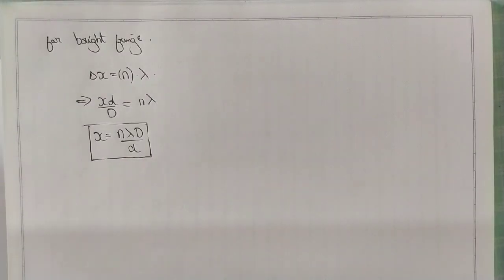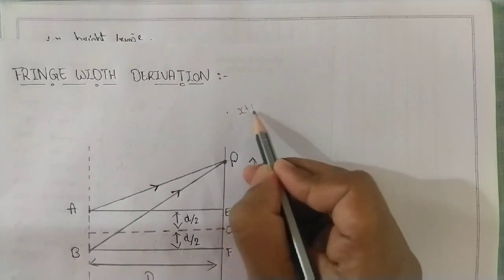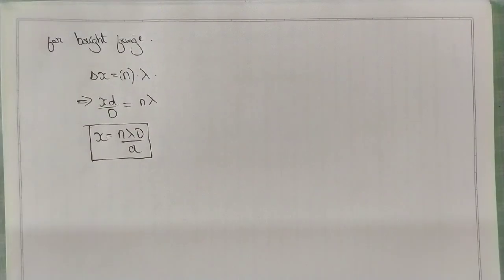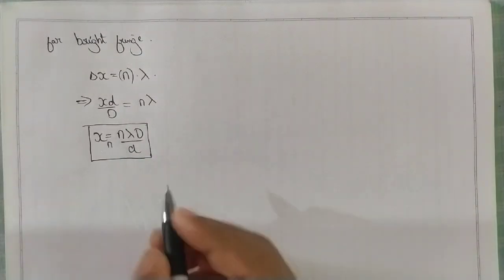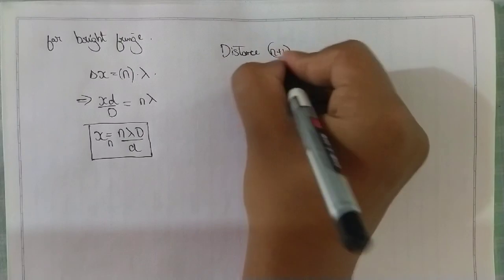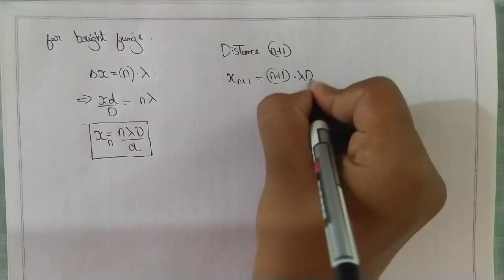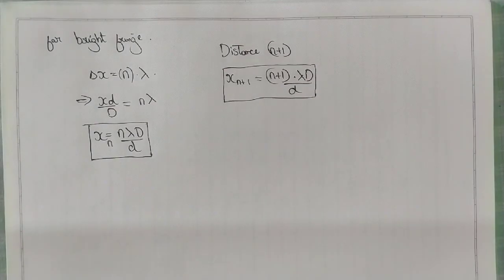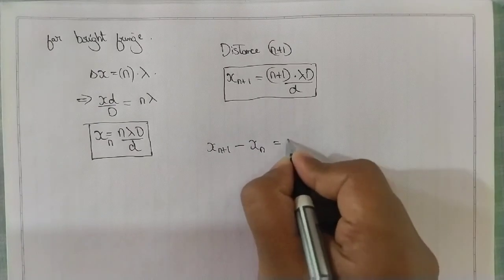Now to find the fringe width, we are supposed to take the next point, that is X_{n+1}. We substitute n+1 in this equation: X_{n+1} = (n+1)·λD/d. The fringe width is X_{n+1} minus X_n. This is our final equation.